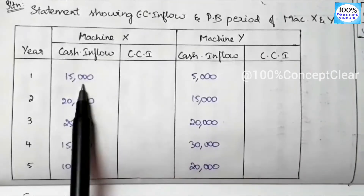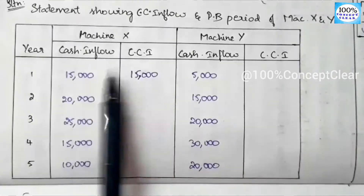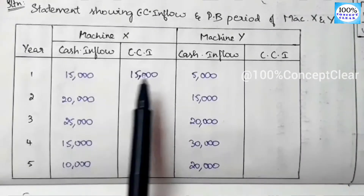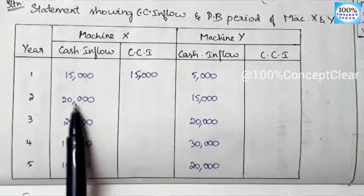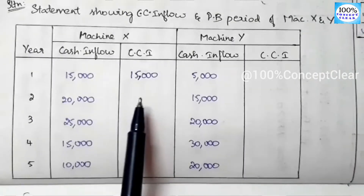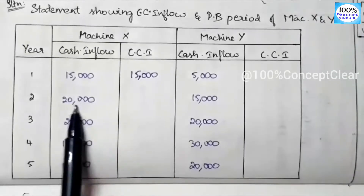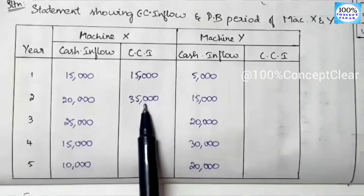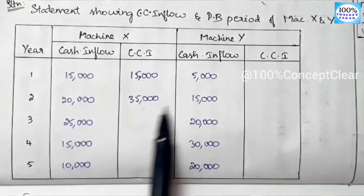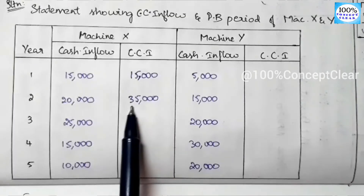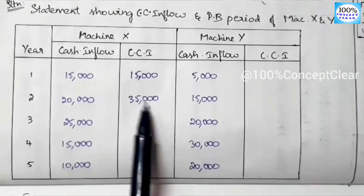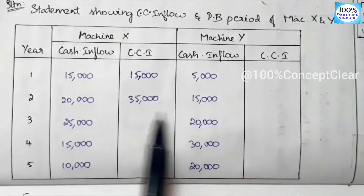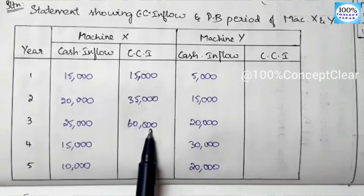In the first year of Machine X, we note Rs. 15,000. In the second year, we add the first year value — that's cumulative. First year is Rs. 15,000, second year is Rs. 20,000, so 15,000 plus 20,000 equals Rs. 35,000. In the third year, we add again: 35,000 plus 25,000 equals Rs. 60,000. Cumulative for the third year is Rs. 60,000.